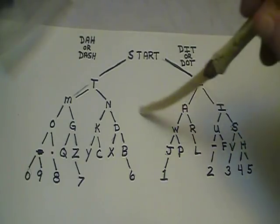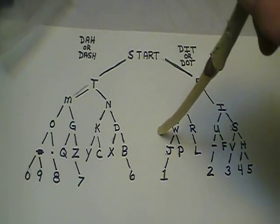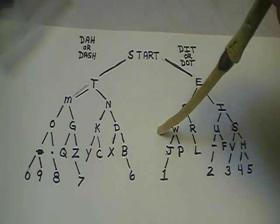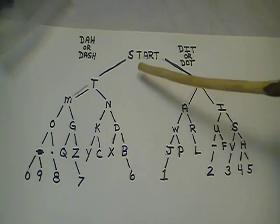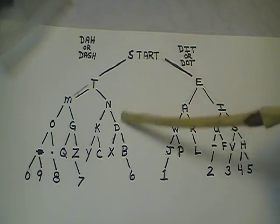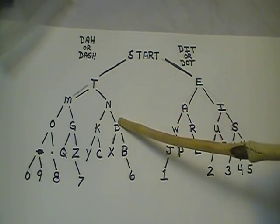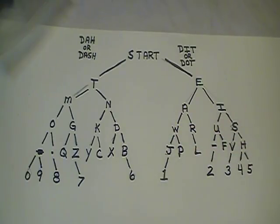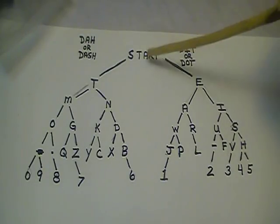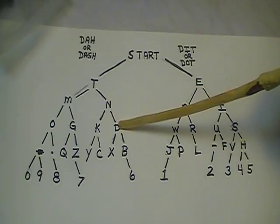This works with every letter as long as you can distinguish the difference between dots and dashes. So let's say the letter D. We know it's a dash and then two dots. So let's hear D and you'll see how it works. One more time. One long, two dots. That gives you D.